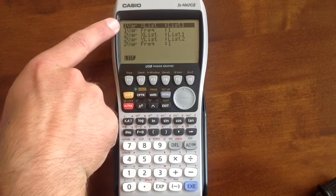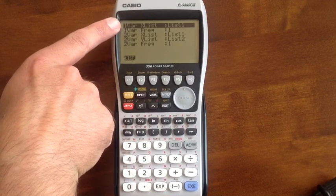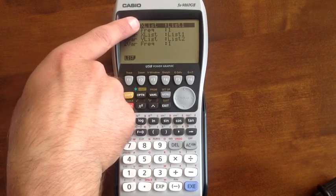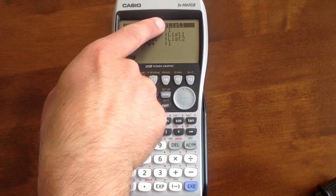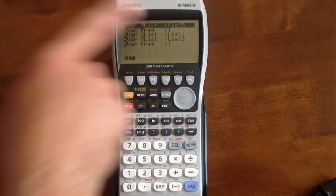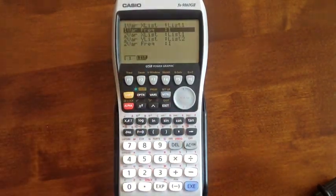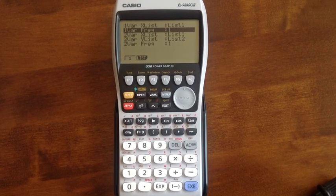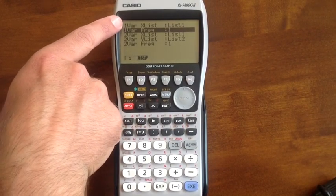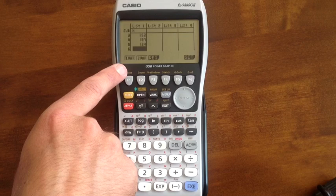Here we've got basically two choices, one variable statistics or two variable. If we're just doing as we are here, where we're looking at height, we would just want the one variable statistics. Two variables when you're comparing, say, height and weight or something like that. One variable xList is telling it where it's getting the information from, so list one. One variable frequency is telling it where it's getting the values for the frequency. Now in this case, I've just got the heights. I'll come back to this in just a second. We've got our data in list one, and each of them occurs once. So we'll come out of there. We then press the one variable button.